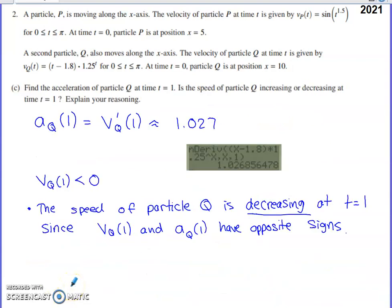Part C asks us to find the acceleration of particle Q at time one and then say something about the speed of particle Q and then explain our reasoning. So the acceleration, we would have to recognize that acceleration is the derivative of velocity. You don't have to do this derivative by hand when the calculator is in play. We just need the numerical value of the derivative. So once again,